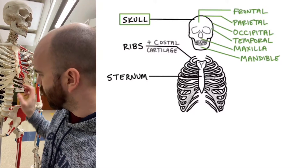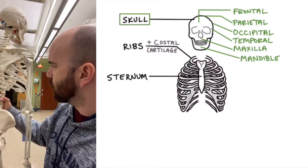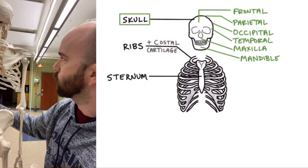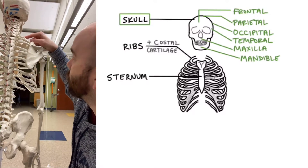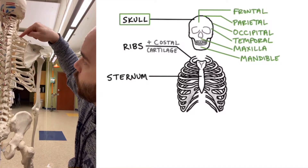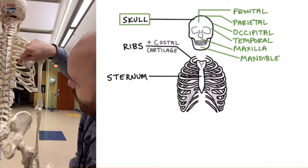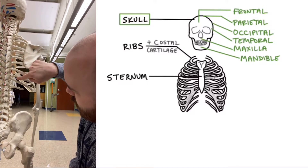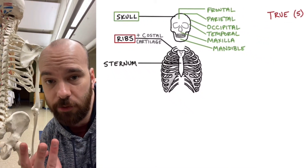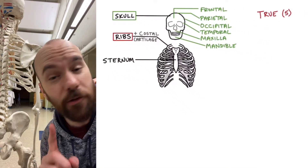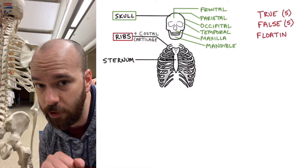We can count the 12 pairs a little bit better from the back here — 12 ribs. There are three categories we use for the ribs: true ribs, false ribs, and floating ribs. Here's how you can tell the difference. The true ribs are going to connect from the vertebrae of the spine to the sternum, and there's going to be one piece of costal cartilage for each of the true ribs.